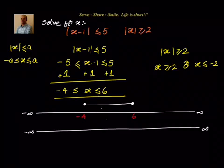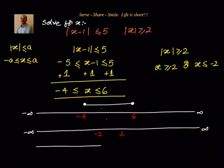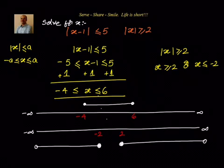For the second condition, x greater than or equal to 2 or x less than or equal to minus 2. On the number line, minus 2 is marked here and 2 is marked here. For x less than or equal to minus 2, minus 2 is included. For x greater than or equal to 2, 2 is also included. But infinity is not included. So these are our two number lines: the first for minus 4 less than or equal to x less than or equal to 6, and the second for x greater than or equal to 2 or x less than or equal to minus 2.